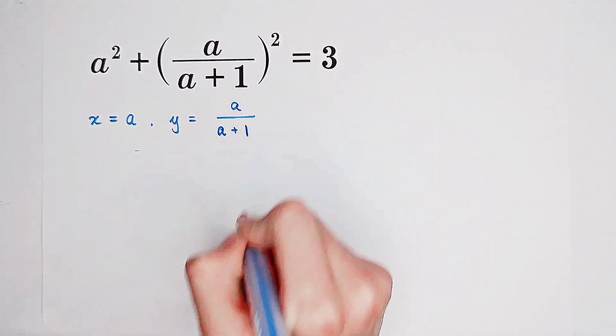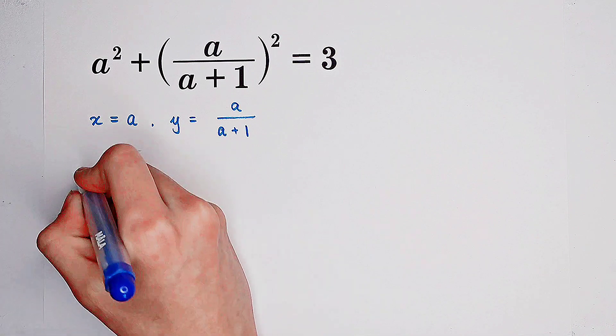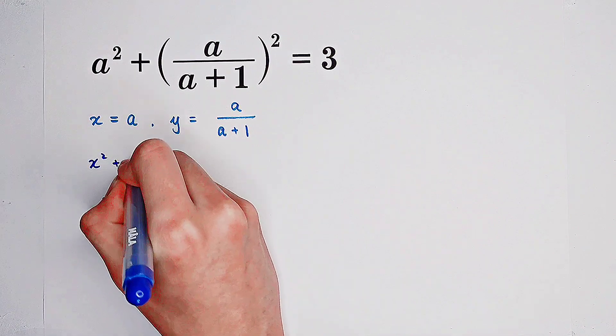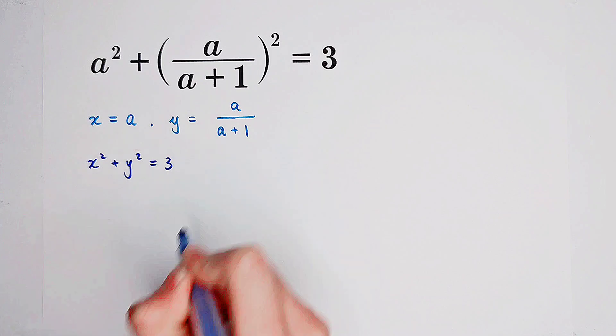We have x squared plus y squared equals 3 according to our ordinary equation.